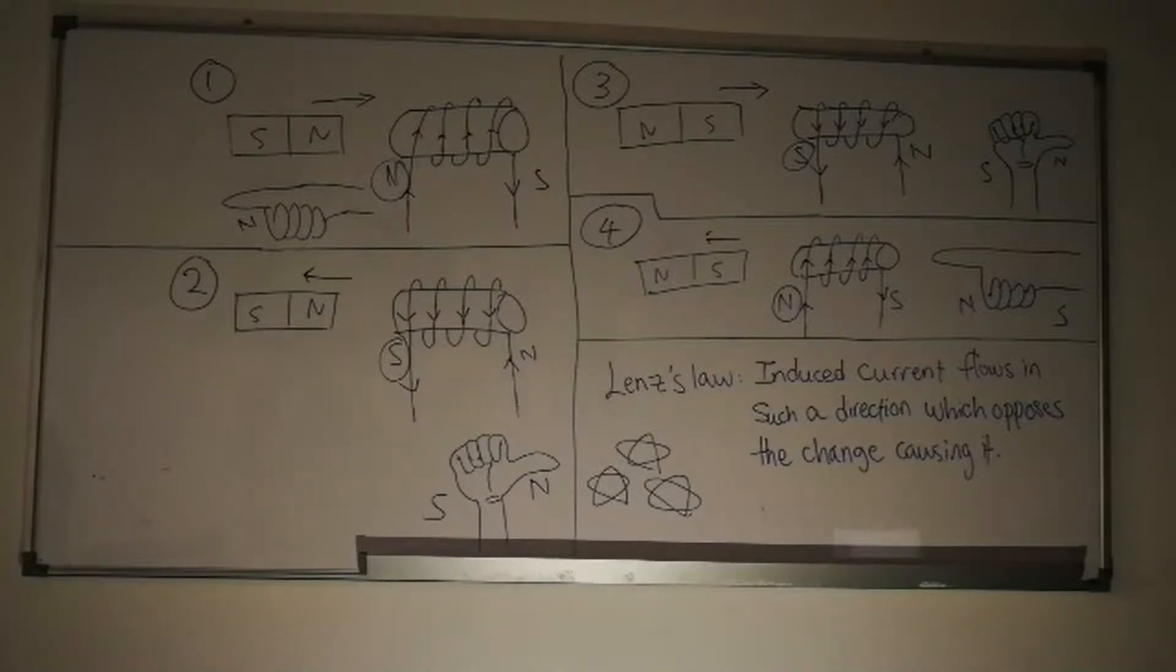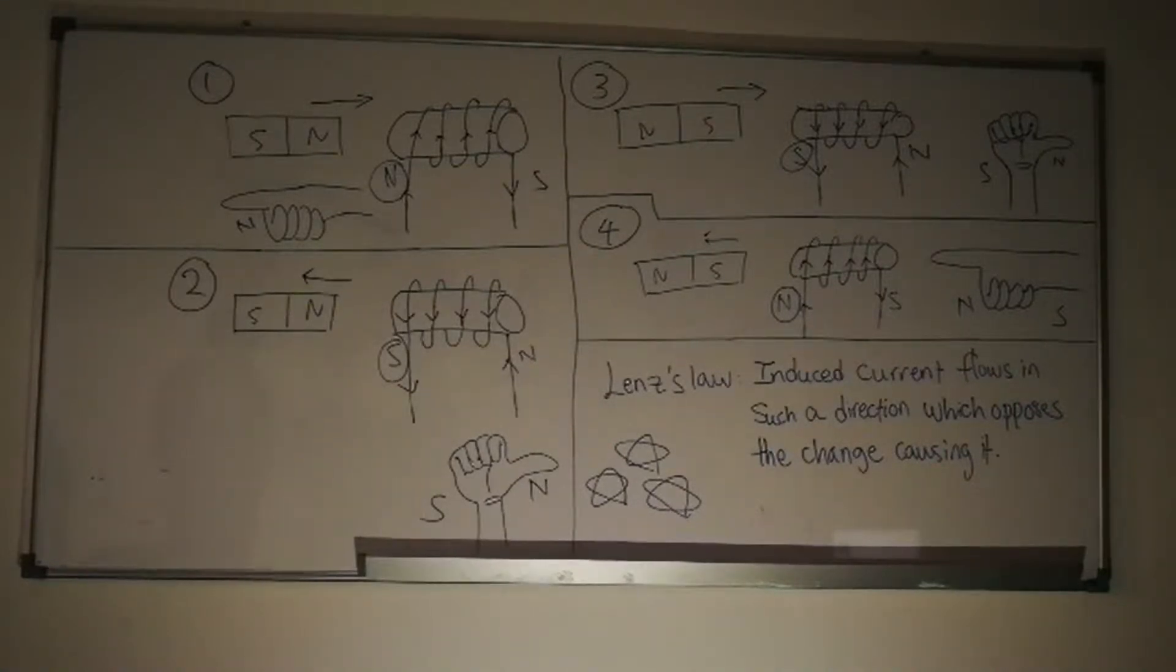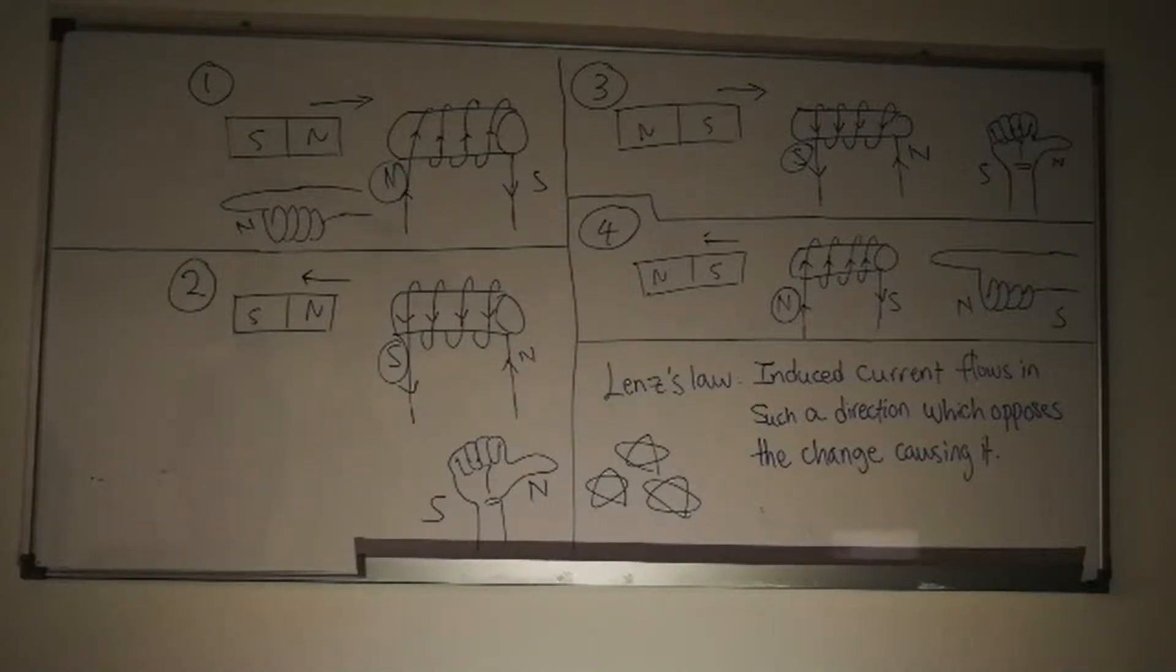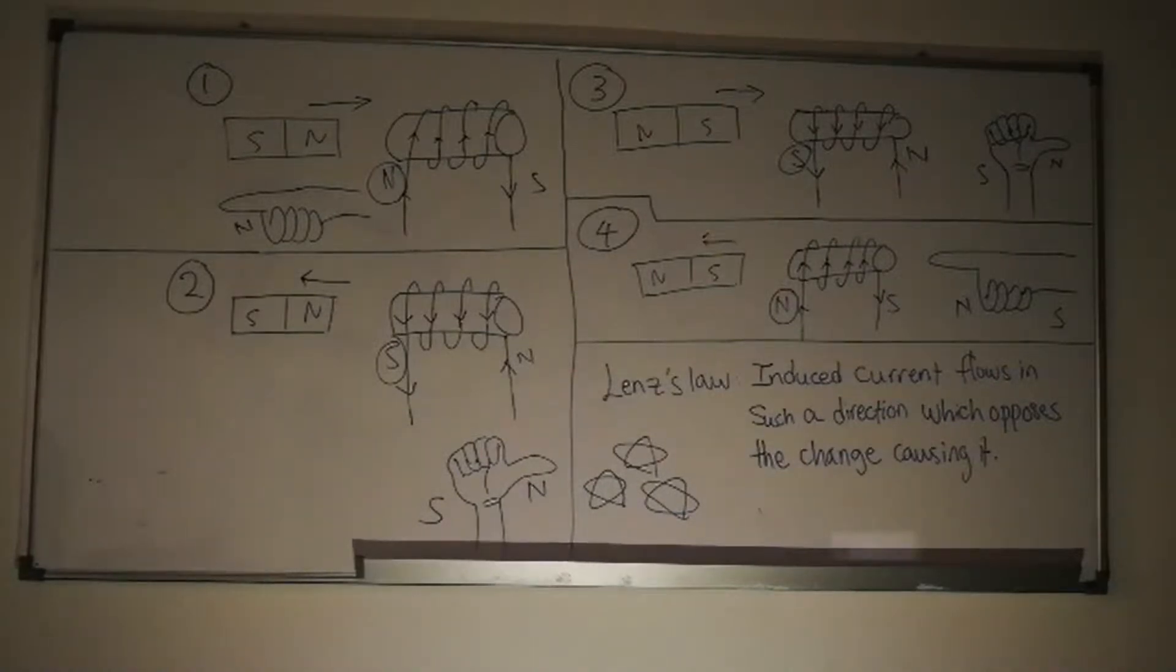Therefore, the opposite pole is induced at the end of the solenoid, which is closest to the magnet, in order to oppose the change. Consequently, the direction of the current flows in the same direction as the direction of the movement of the magnet.